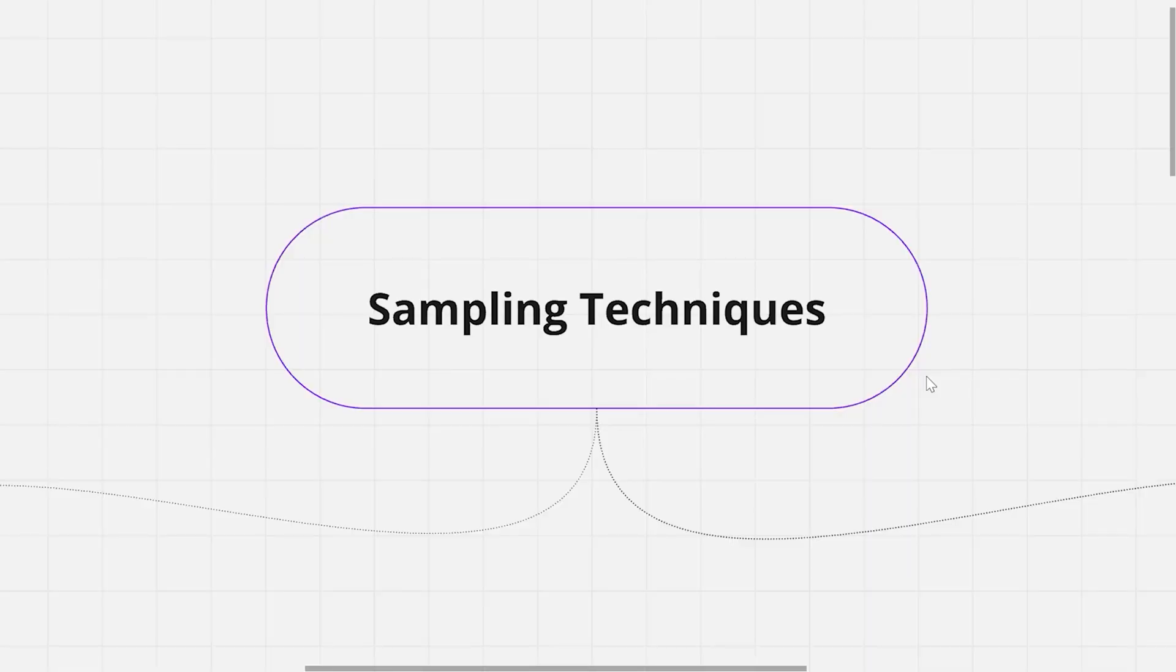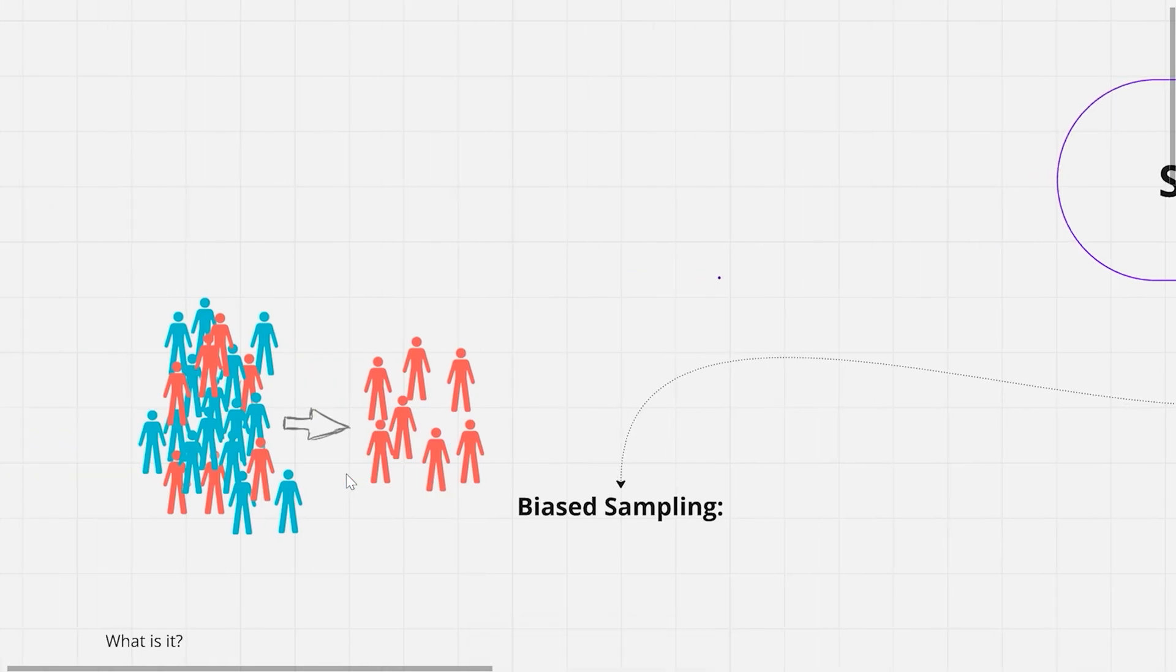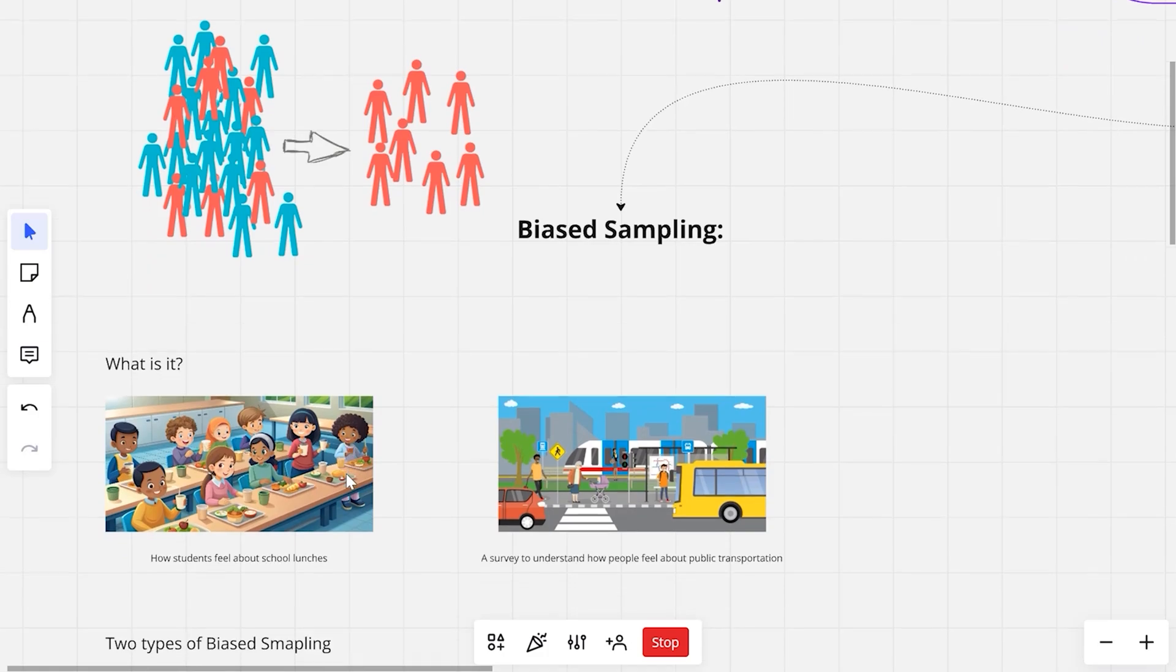Basically there are two types of sampling techniques in machine learning. First one is biased sampling. Biased sampling happens when you pick a group of people in such a way that does not exactly represent the complete picture. So, what exactly is biased sampling?